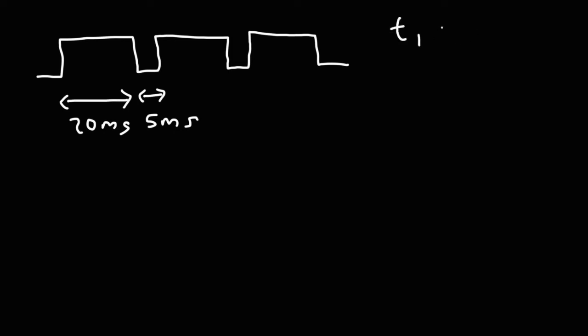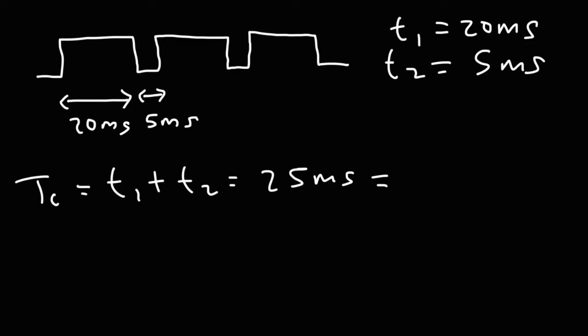So we have T1 which is 20 milliseconds and T2 that's 5 milliseconds. So the cycle time is going to be the pulse width T1 plus the space width T2. So it's 20 plus 5, it's 25 milliseconds. Now to convert milliseconds into seconds divide by 1000. So 25 divided by 1000 is 0.025 seconds. So that is the cycle time for this particular rectangular wave. That's the time between this point and that point.